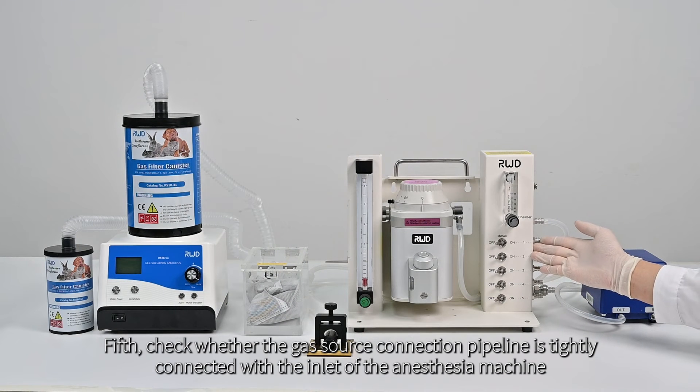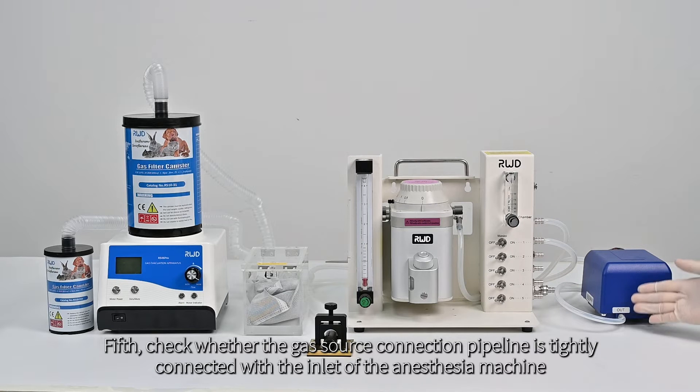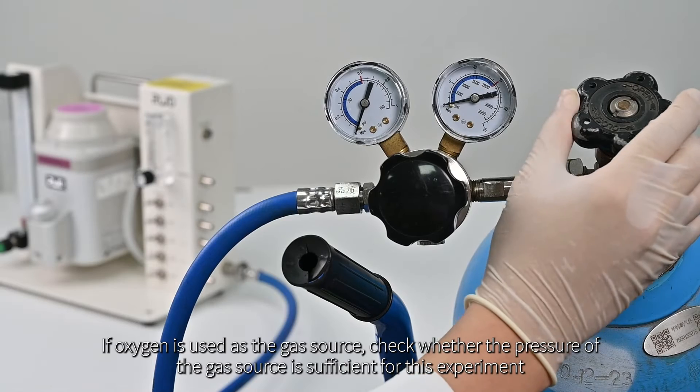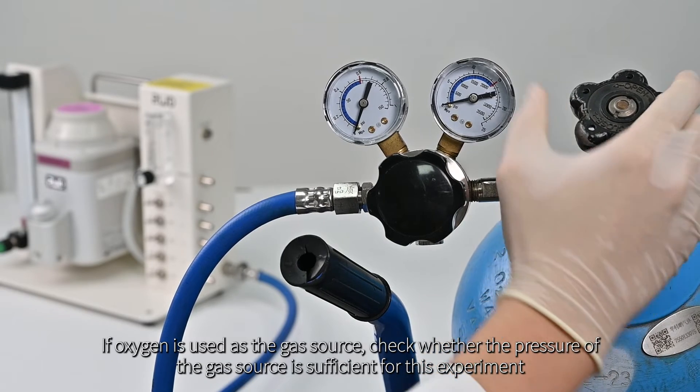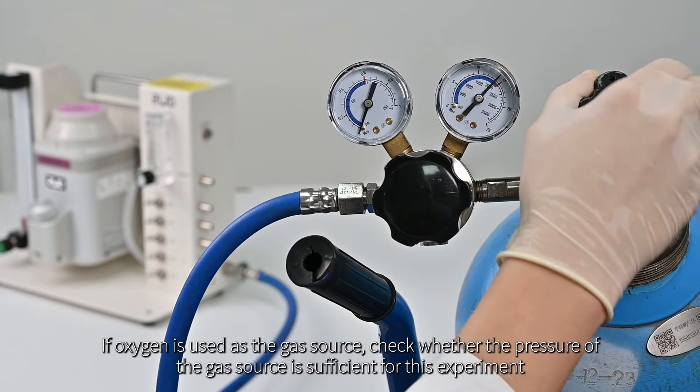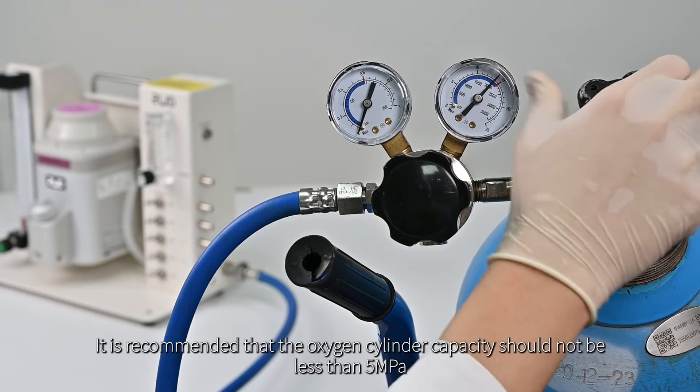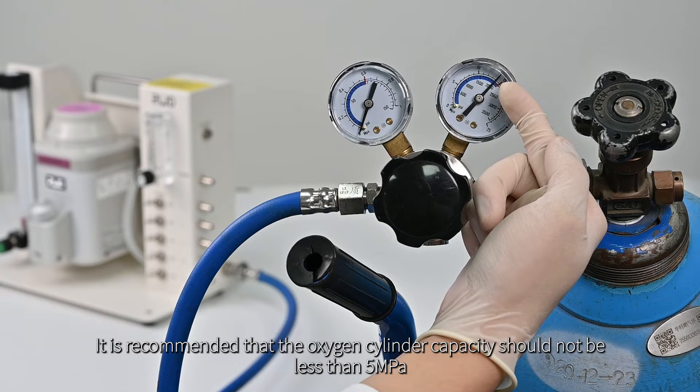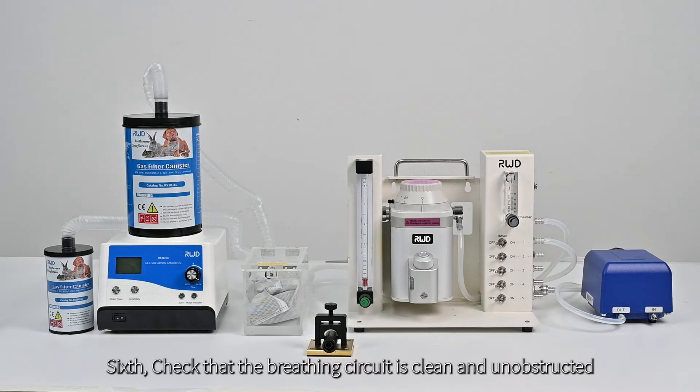Fifth, check whether the gas source connection pipeline is tightly connected with the inlet of the anesthesia machine, and there is no leakage. If oxygen is used as the gas source, check whether the pressure of the gas source is sufficient for this experiment. It is recommended that the oxygen cylinder capacity should not be less than 5 megapascal.